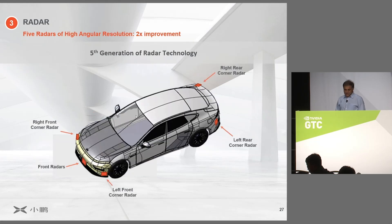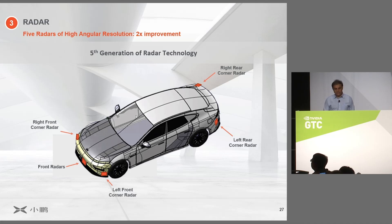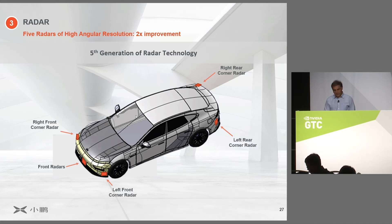The radars are fifth-generation radar technology. Angular resolution has come down to about three degrees with a 150 to 160 meter range. These radars will in many cases even detect stationary objects, something that most radars have issues with. The radars on the side are a different kind of radar, and the radar at the front is of course the long-range radar.